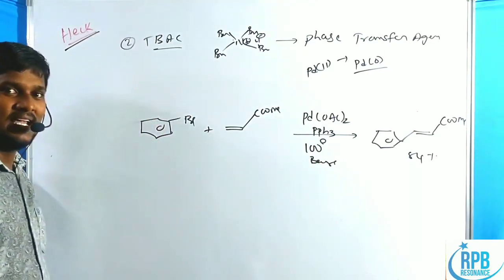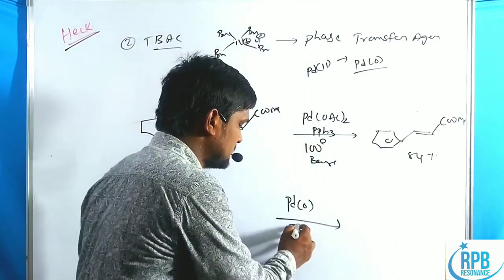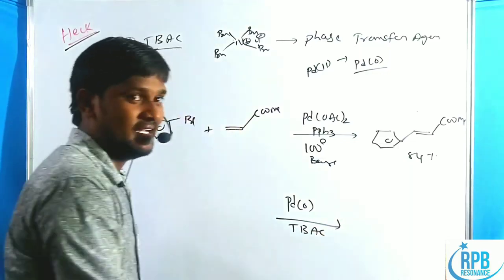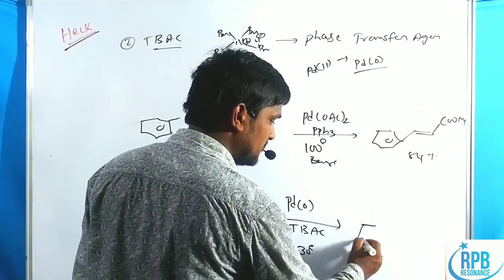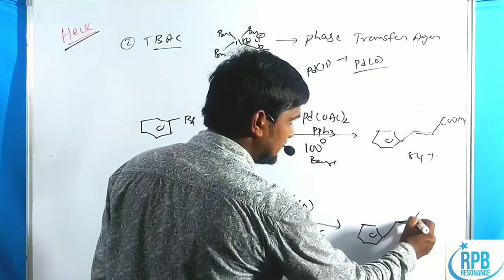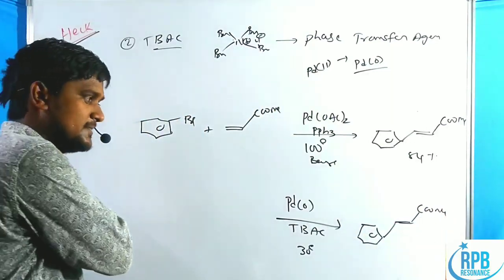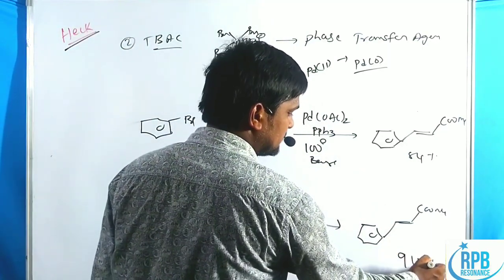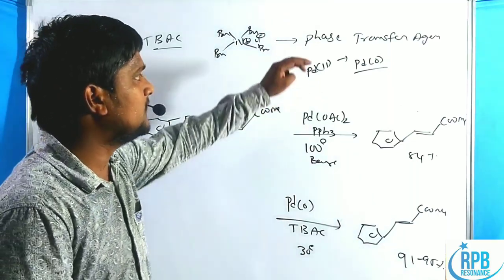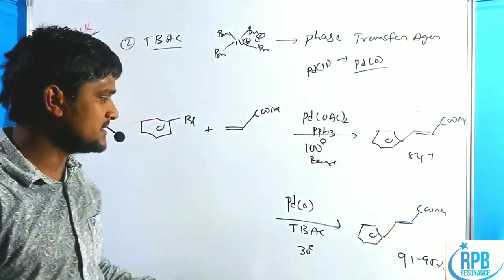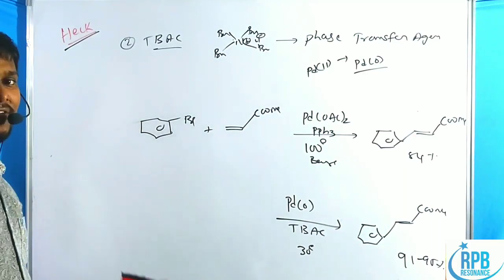However, when a phase transfer reagent is used along with Pd(0), the reaction requires only 30°C, and it improves catalyst effectiveness, giving yields of 91–95% instead of 84%. The presence of a phase transfer agent thus significantly improves catalyst effectiveness.